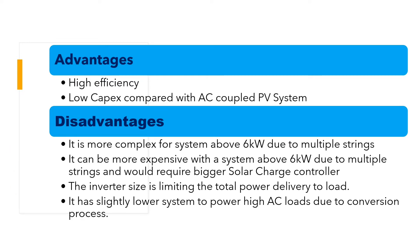The inverter size limits the total power delivered to the load. It is slightly slower to power high AC loads due to the conversion process.